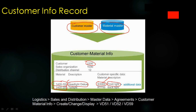So we want to enter this information into the sales order and also want it printed when the sales order output is generated. We'll talk about sales order output in a later session, but let us discuss the Customer Info Record here.